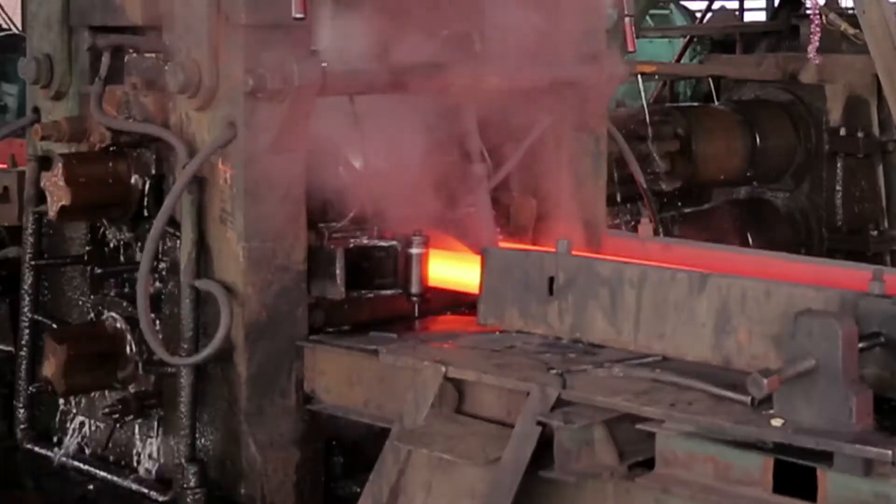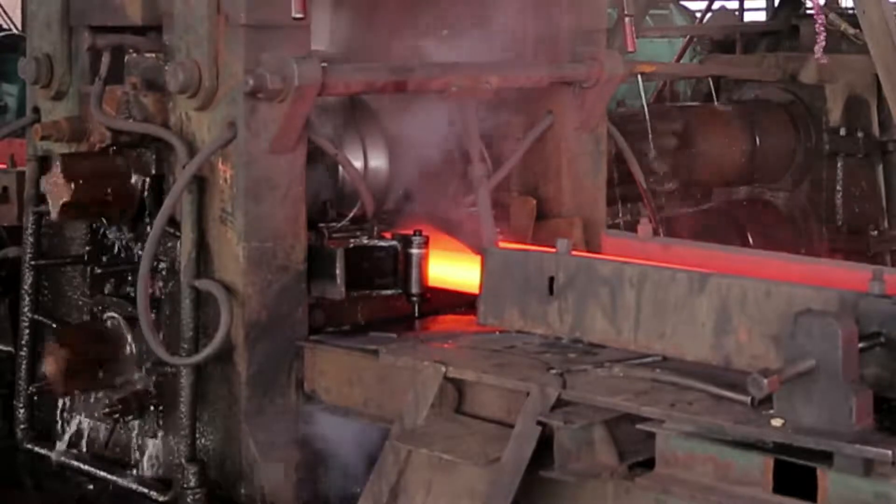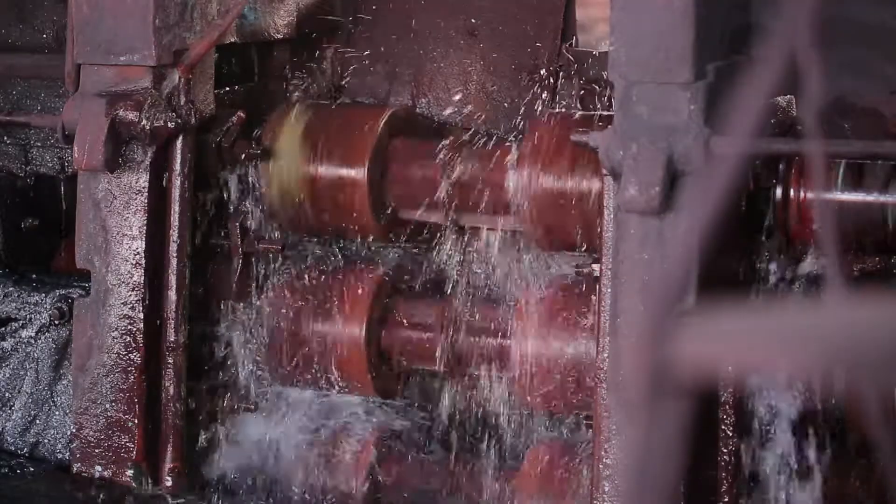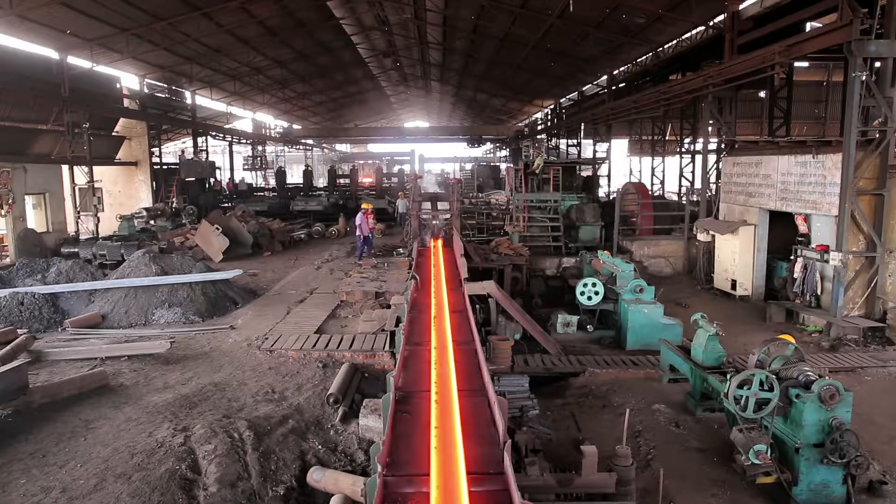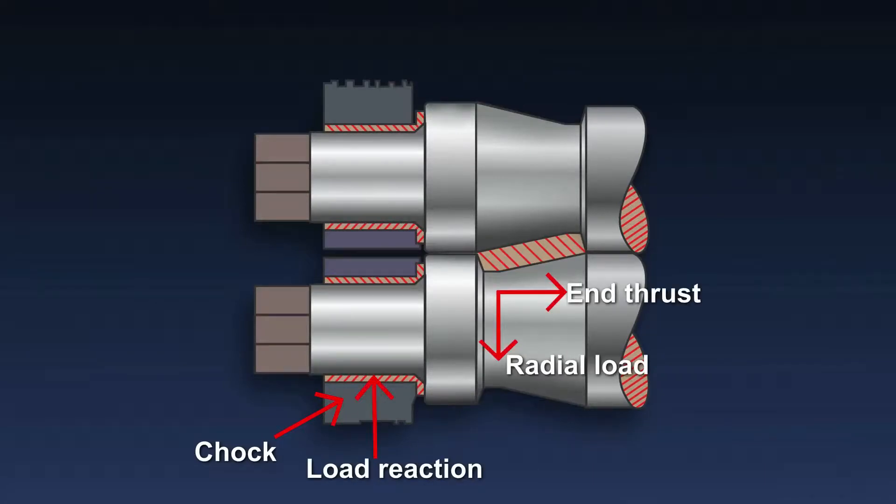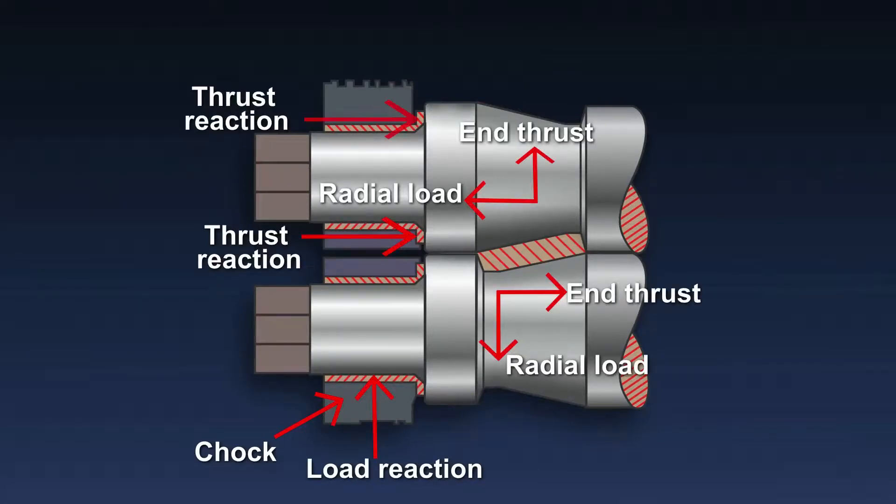Rolling mill bearings are required to withstand extremely severe operating conditions including heavy shock loads, bearing speeds, and extreme temperature variations. In most cases, the bearing has to withstand both the radial roll separating force and the roll end thrust as illustrated here.